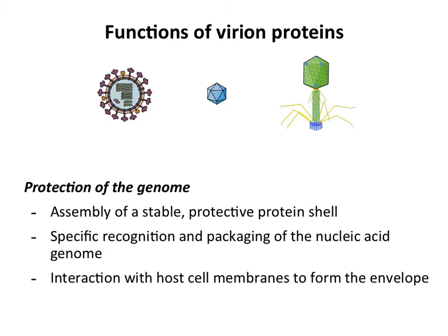Virion proteins — the proteins that make up the virion, the capsid, that are embedded in the envelope — have very specific functions. They're there to protect the genome. Each virus particle has a nucleic acid genome within it, so one function is to be a stable shell that protects it, because viruses spend a lot of their time traveling between hosts or between cells. During assembly of new virus particles, the virion proteins have to recognize the nucleic acid and package it. For viruses that acquire an envelope during maturation, the structural proteins have to participate in that process.